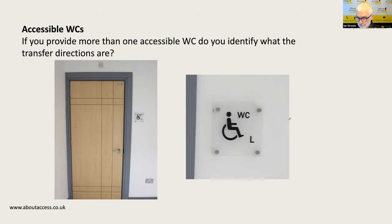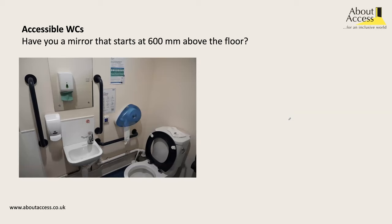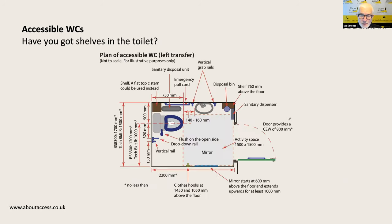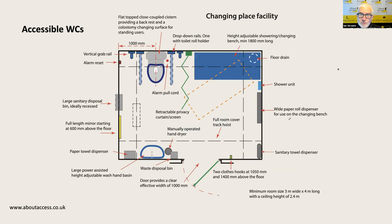So if somebody has a need for a particular transfer direction, they know where to go. We also want a mirror starting at 600 millimetres above the floor — please don't put it opposite the WC pan; nobody wants to see themselves sitting on the toilet. Accessible WCs should also have shelves at the correct locations shown in the diagram. I've also included information on changing place facilities — not a quick win, but useful to know what that standard of provision requires.